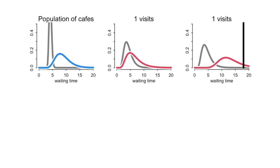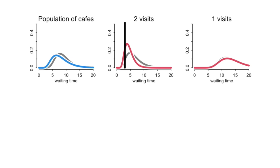The distribution has been pushed out to the right and is flatter — the golem expects more variation because the wait time at cafe alpha was short, only about two minutes, while cafe beta's was about 18 minutes. The golem thinks that cafes are quite different from one another. You can come back to cafe alpha and get a second data point and Bayesian updating proceeds. At every visit, the golem updates both every cafe it's visited and the population of cafes.